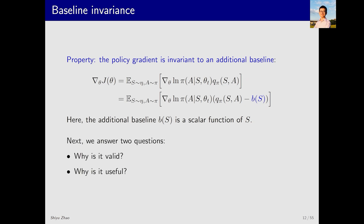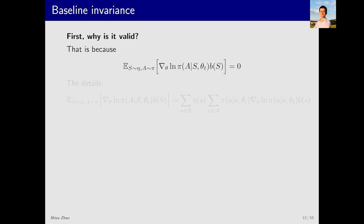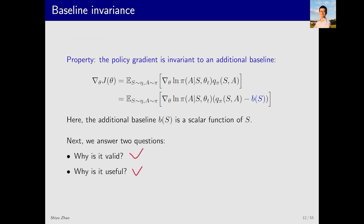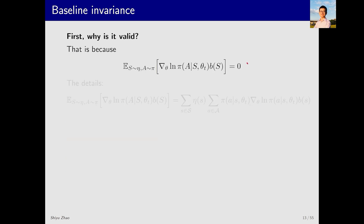Now, we need to answer two questions. First, why is it valid? That is, why does introducing a new B not affect the gradient? Second, why is it useful? That is, why do we need to care about the function B, and what is its purpose? Let's answer the first question. We return to the previous slide where these two equations are valid. Clearly, multiplying this term by the baseline B and then taking the expectation should give us zero, so this equation must hold.